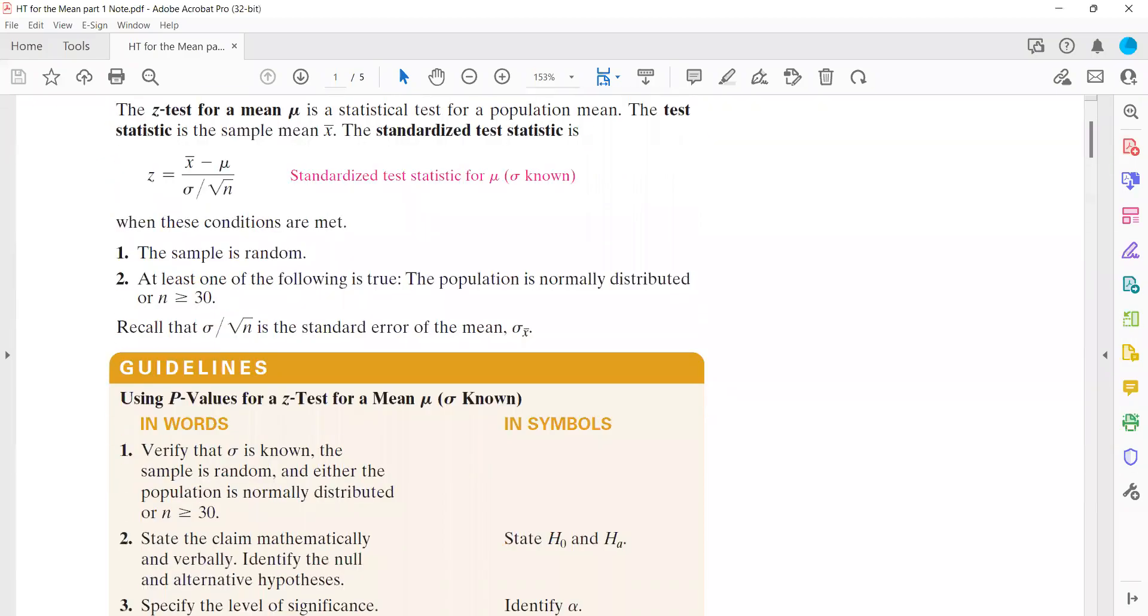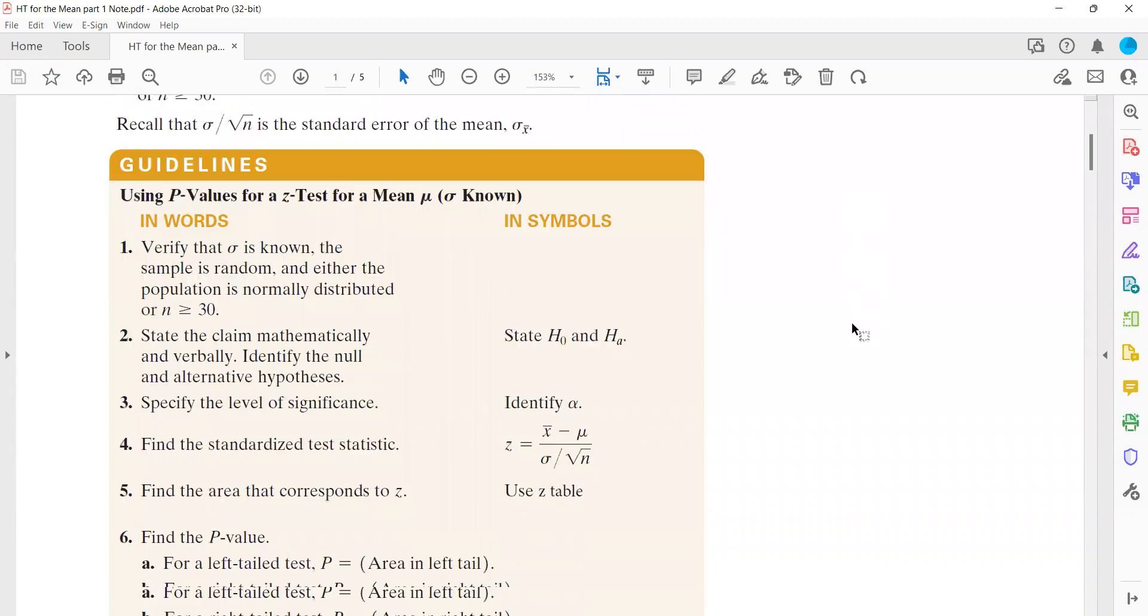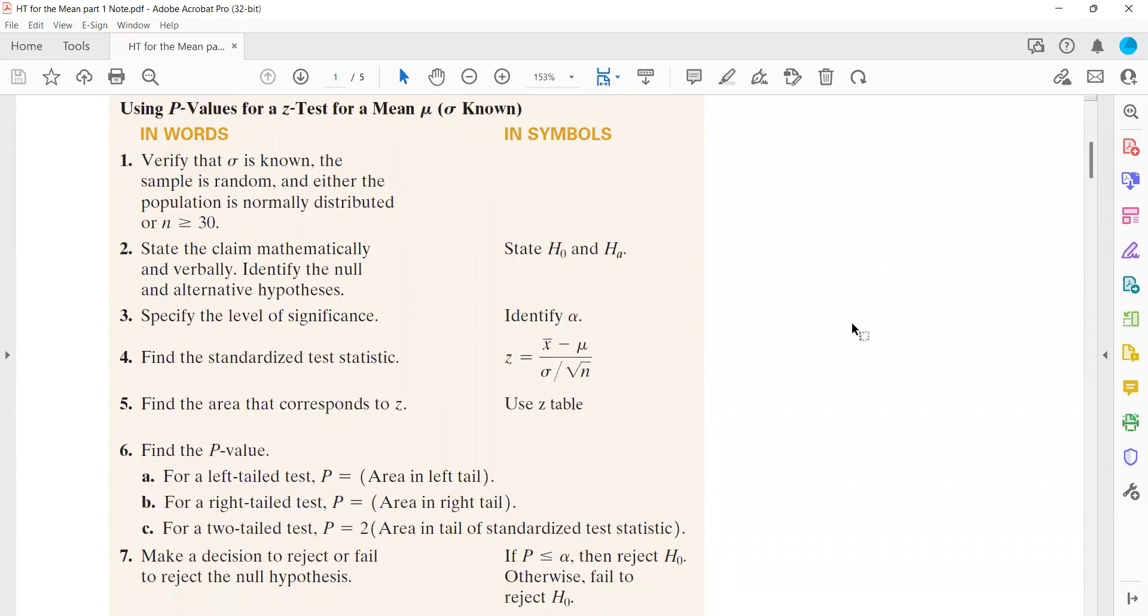Let us take a look at our notes. So these are the steps that we're going to take to analyze null and alternative hypothesis using p-value.